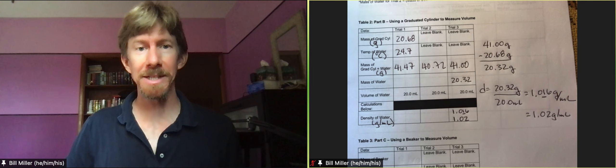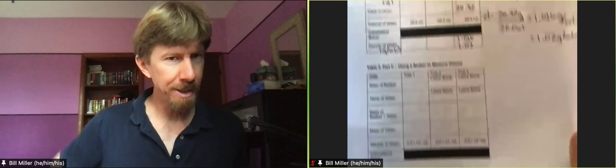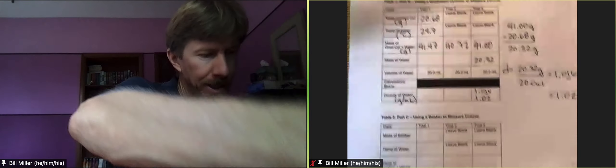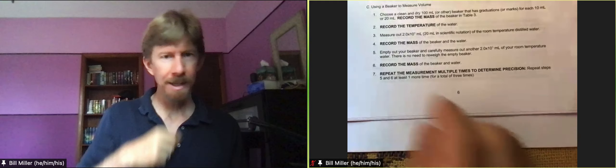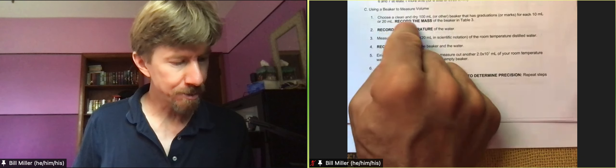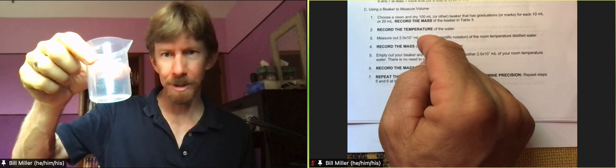This is going to be Experiment 1 Basic Techniques, table number 3. And for table number 3, we're going to use a beaker to measure volume. It says choose a clean, dry 100 milliliter or other beaker, and I'm going to choose my 100 milliliter beaker.